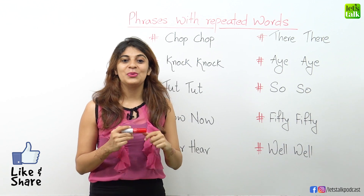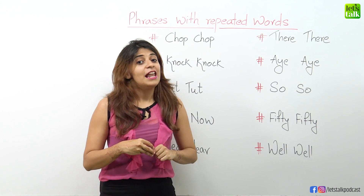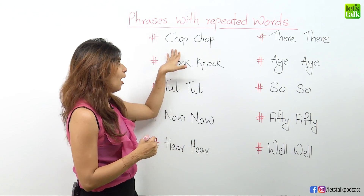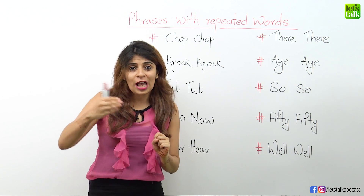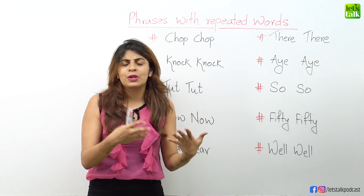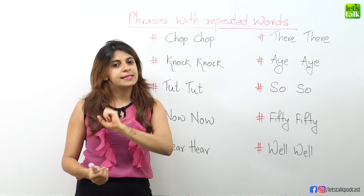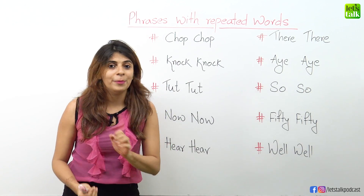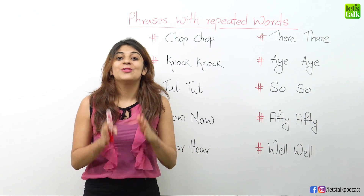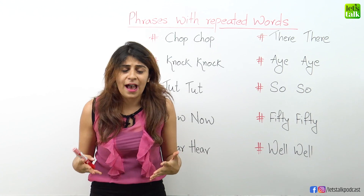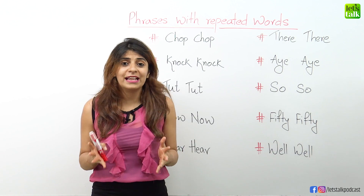The first one I have for you is 'chop chop'. So what does this really mean? Now if you look at the word chop used just once, the meaning is to cut, right? To cut something, to cut vegetables, to chop vegetables. But the moment you repeat the same word — chop chop — you get a new phrase which actually means to hurry up. So when you wanna ask someone to make it fast or to hurry up, you can use the phrase 'chop chop, we are getting late'.